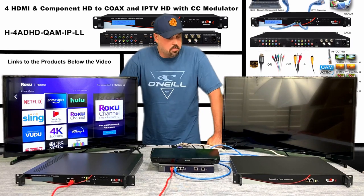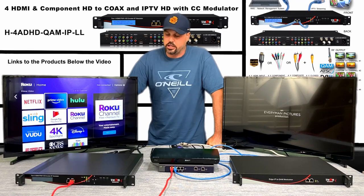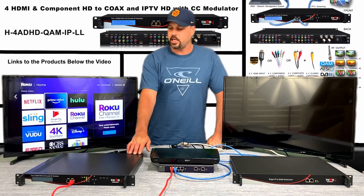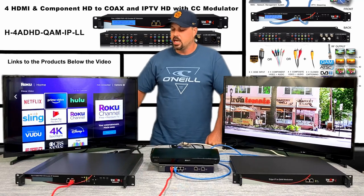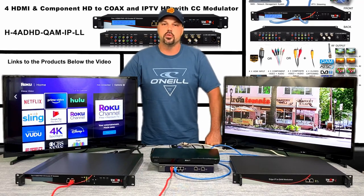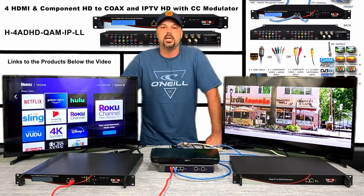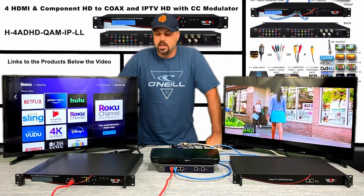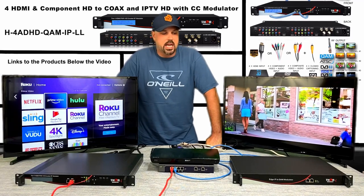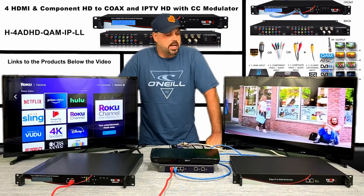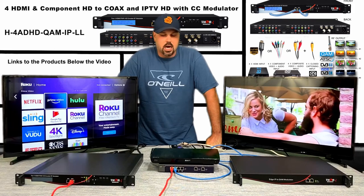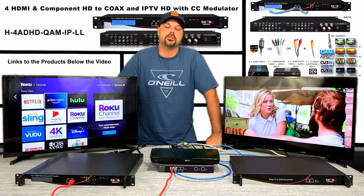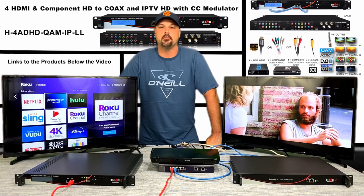I wanted to discuss this application. We're using an encoder for HDMI input — an HD encoder. This encoder will do UDP, RTP, and RTSP. Today we're going to be focusing on UDP stream specifically, and instead of unicast, we're going to use multicast.